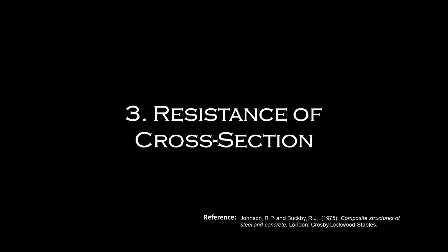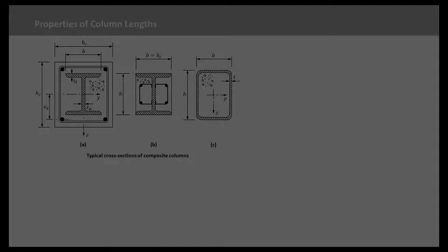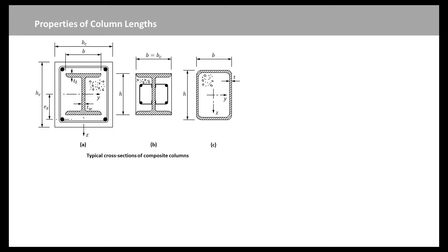Next, we will introduce resistance of a cross section of composite columns. Concrete encased edge or I sections are considered as shown in figure A and B. Concrete filled steel tubes are shown in figure C. The encased cross sections are assumed to have biaxial symmetry and to be uniform along each column length. Applied moments are resolved into the planes of major axis and minor axis bending of the column, and their symbols have additional subscripts Y and Z respectively, where necessary.